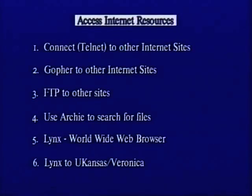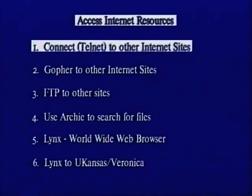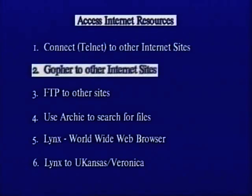We start out with a menu that comes from our access provider. We have various services that we can use. The first one is called Telnet — this is a way to log on to other computers located all around the world that are hooked into the internet system. This is how we go out and find files we may want to get, like software files or information that you might want to track down.